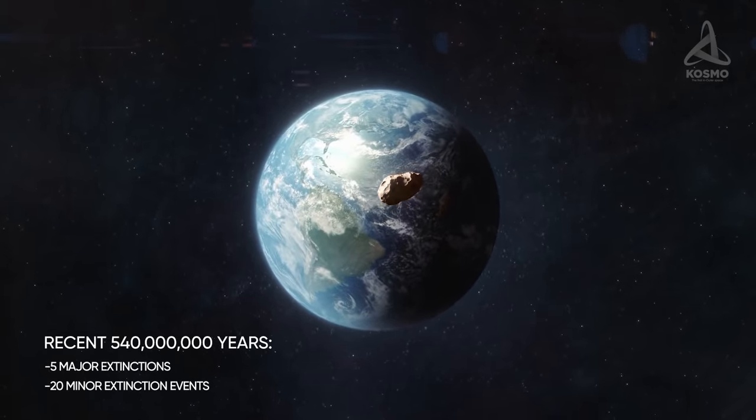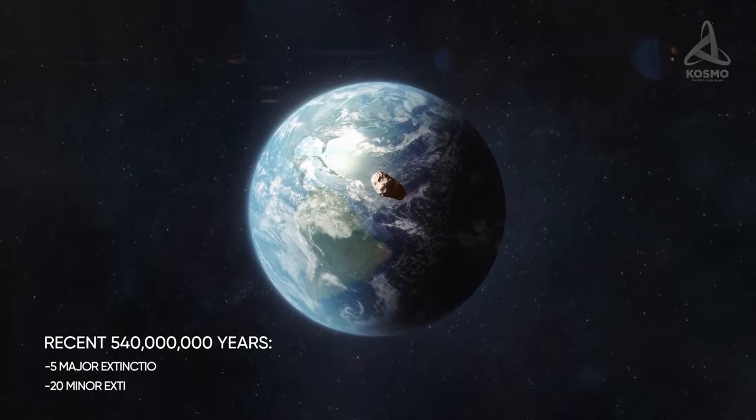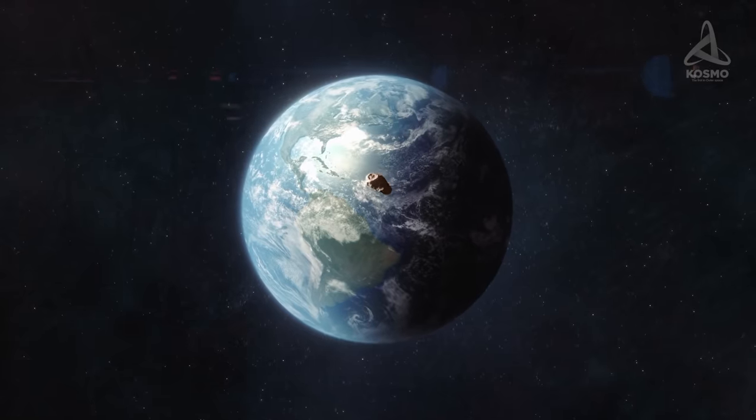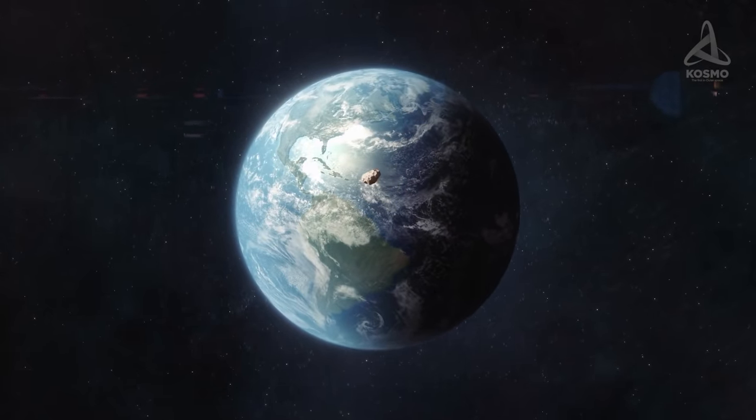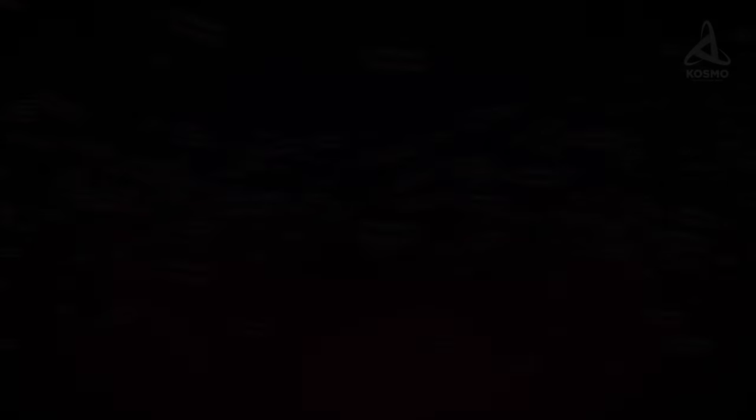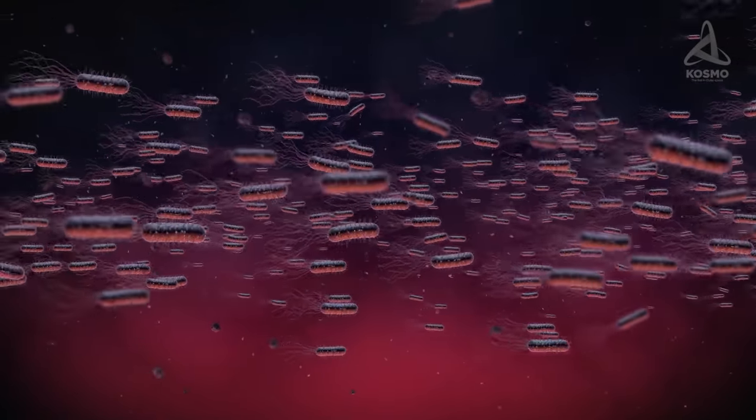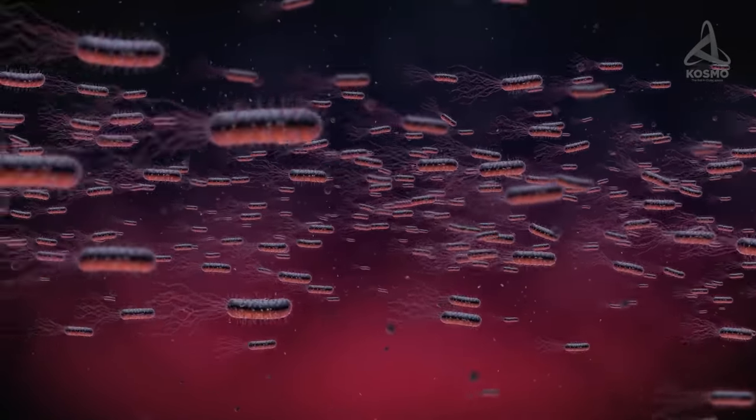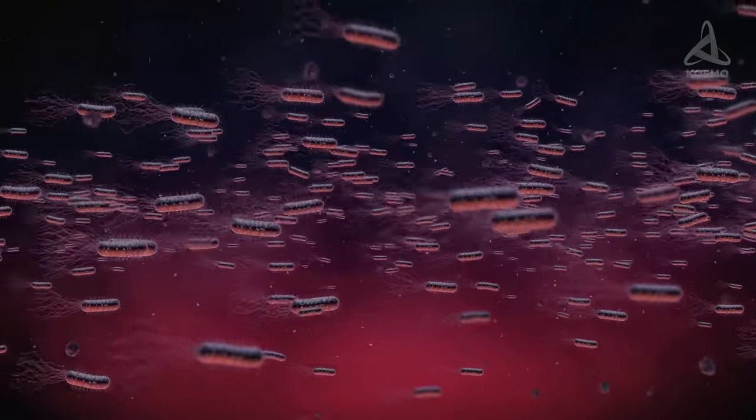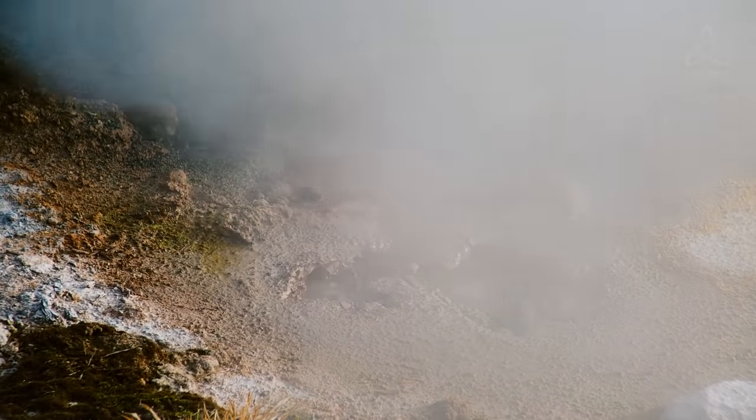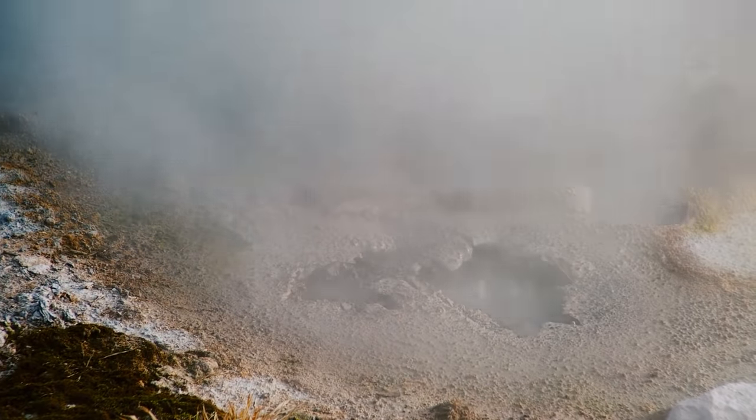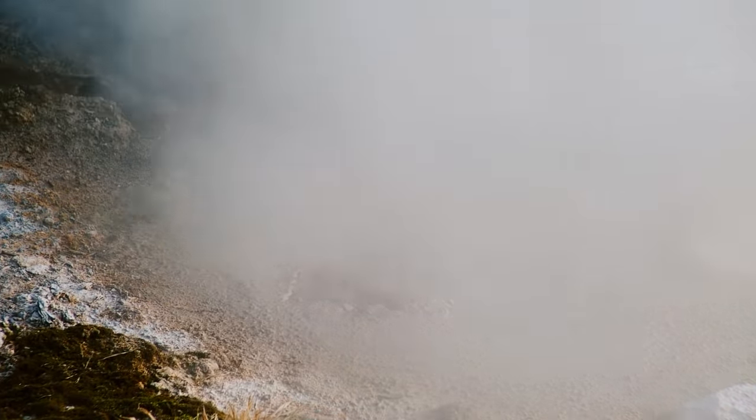However, the most global crisis of our planet's biosphere occurred much earlier, approximately 2.1 billion years ago. The first living organisms are posited to have appeared on Earth rather early. Approximately, but not quite, 4 billion years ago. That is about 400 million years after the planet's surface had become more or less suitable for life.